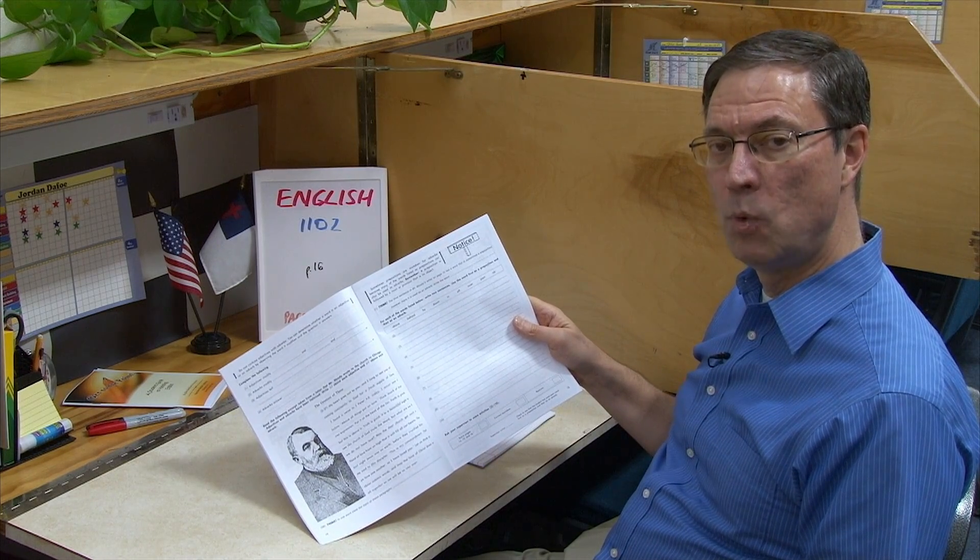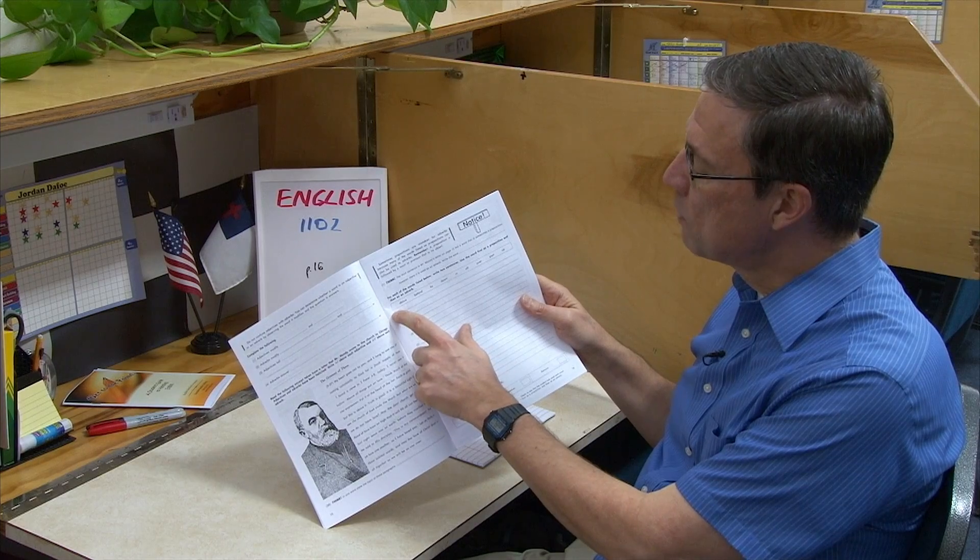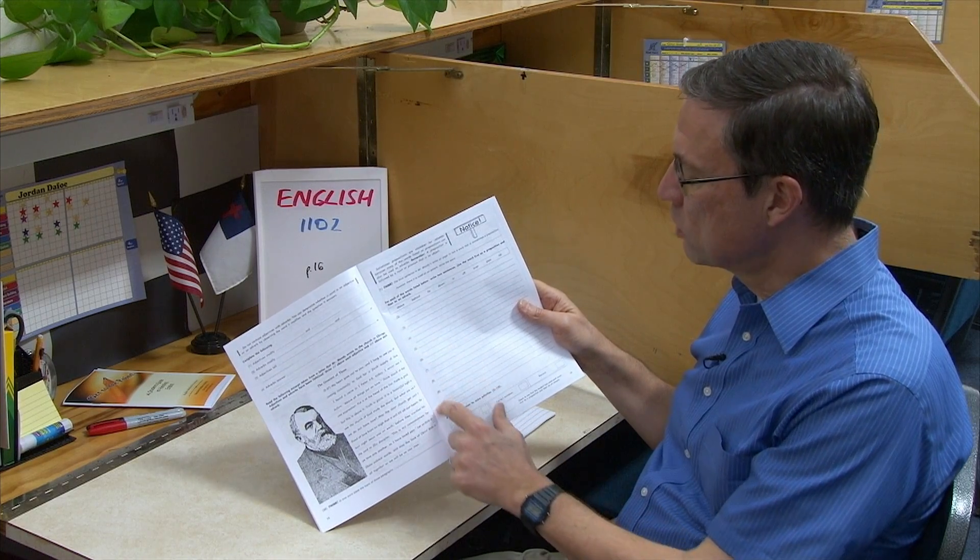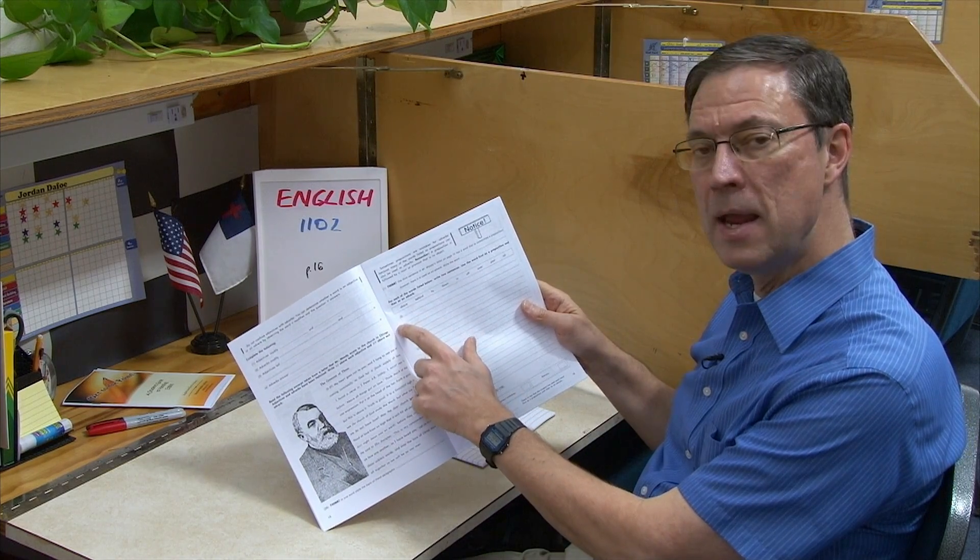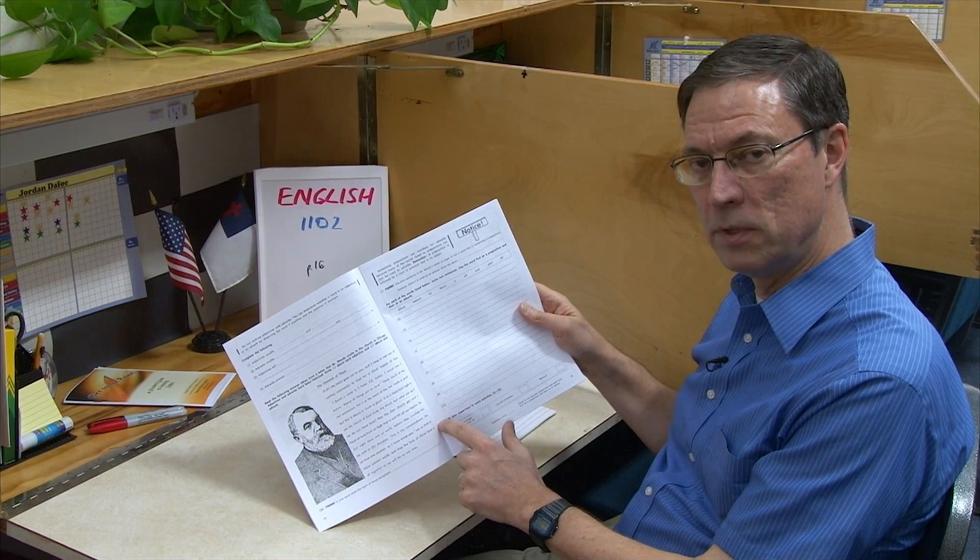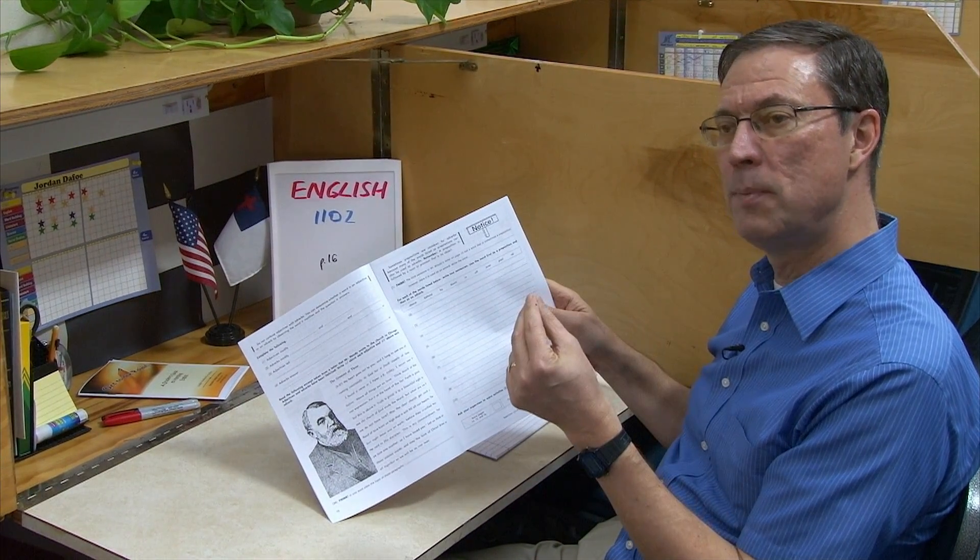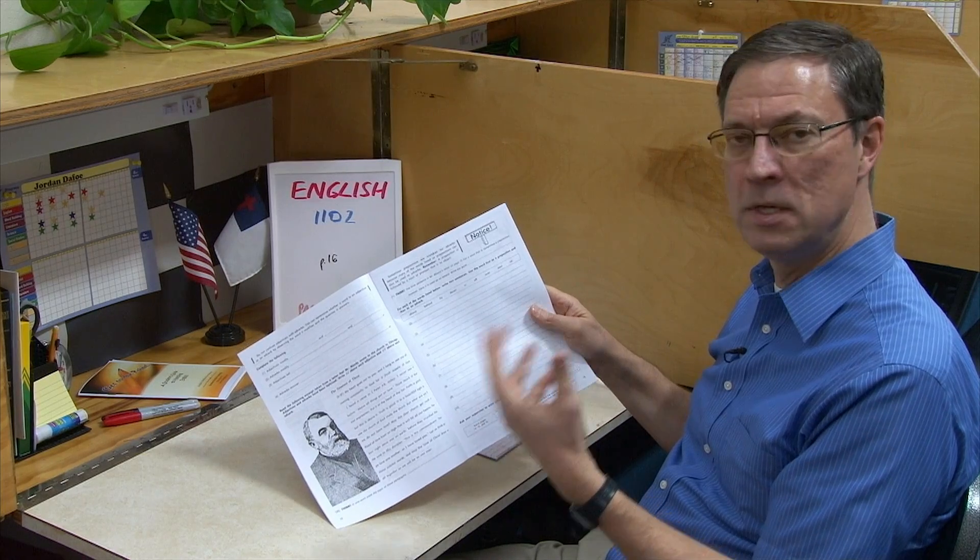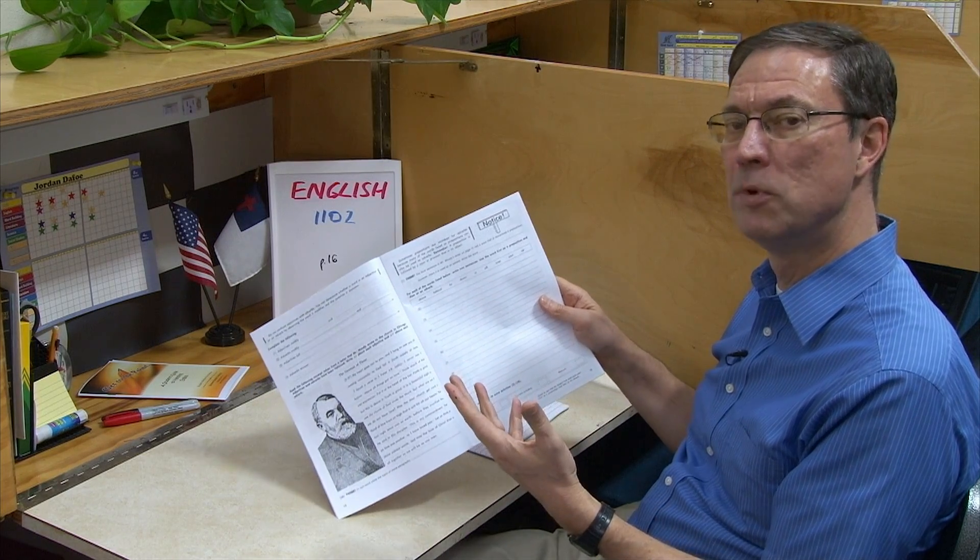So clue number one: I would put a P next to the first line of all of these and an A next to the second one of all of these. Always do the preposition first, always do the adverb second. It'll make it easier for you, it'll make it easier for your supervisor grading it.